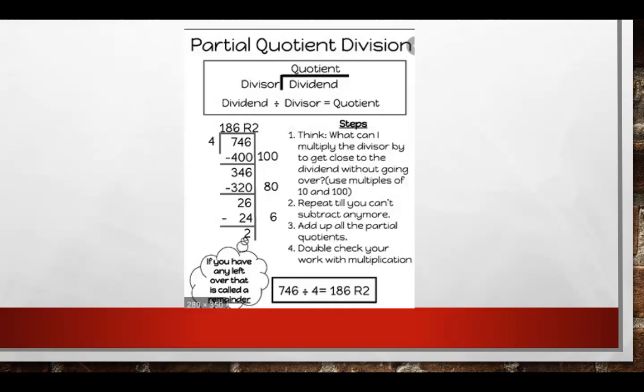This idea of a partial quotient division. Quickly, we have our dividend here, the number being divided. Our divisor, the number doing the dividing, the number going into a number. And then the quotient is going to be our result. So we have a dividend divided by a divisor, equaling our quotient. Notice how they have the same division problem, just written out in different forms. This strategy says, what can I multiply the divisor by to get close to the dividend without going over?